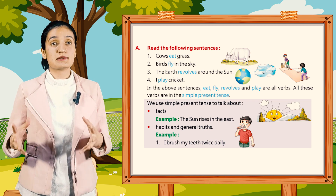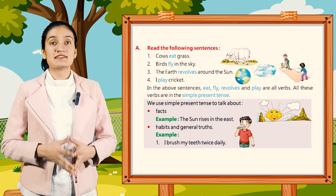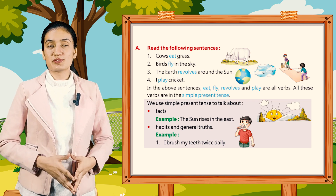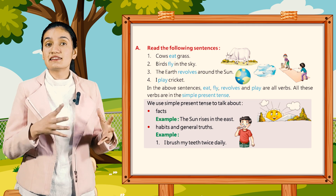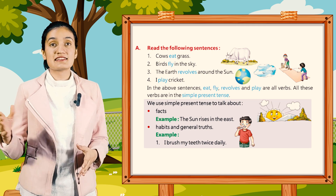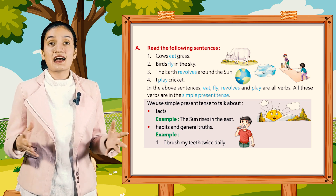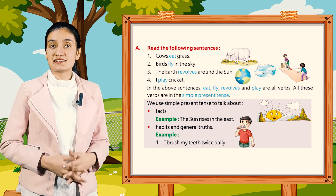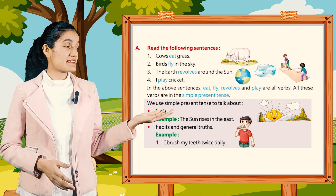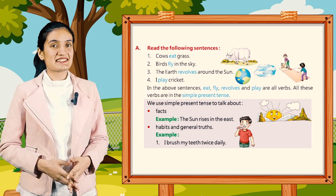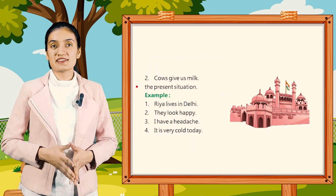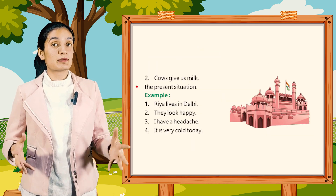We use simple present tense to talk about facts. Example: the sun rises in the east. Habits and general truths. Example: I brush my teeth twice daily. Cows give us milk.